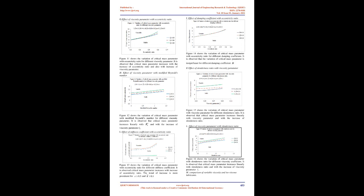Figure 8 shows the variation of critical mass parameter with slenderness ratio for different eccentricity ratios. It is observed that critical mass parameter increases with slenderness ratio and also with the increase of eccentricity ratio. Figure 9 shows the variation of critical mass parameter with slenderness ratio for different modified Reynolds numbers. It is observed that critical mass parameter increases with slenderness ratio and also with the increase of modified Reynolds number. The nature of variation can be observed from Figure 9.